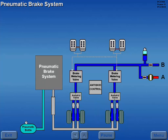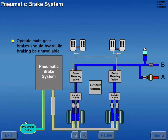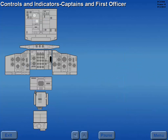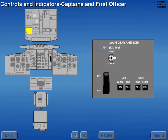A pneumatic brake system is installed to operate the main gear brakes should normal hydraulic braking be unavailable. Pneumatic bottle pressure is displayed on a direct reading gauge located in the nose wheel well. Minimum charge pressure is 1,100 PSI.